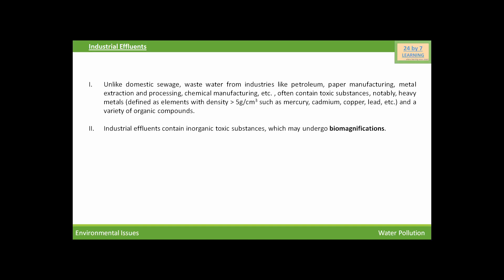Industrial effluents contain inorganic toxic substances which may undergo biomagnification. Biomagnification is the increase in concentration of a toxin at successive trophic levels. This toxin gets accumulated in the body of an organism and is passed on to the next level.